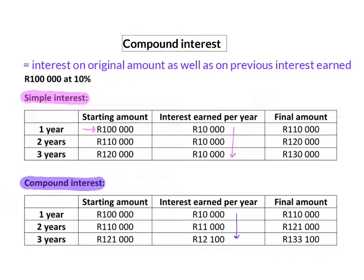So as your account grows, your interest earned per year also grows, even though it is still 10%. It is now 10% of a larger amount.